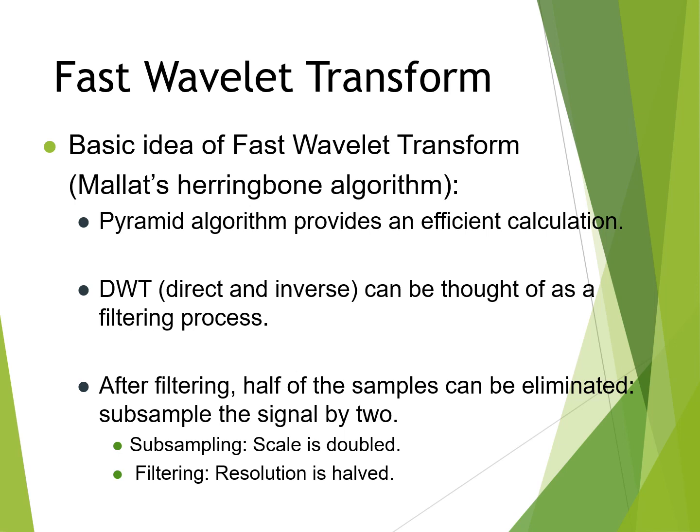The pyramid algorithm provides an efficient calculation. DWT, direct and inverse, can be thought of as a filtering process. After filtering, half of the samples can be eliminated — sub-sampling the signal by two. Sub-sampling scales the signal and the scale is doubled, while the filtering resolution is also doubled.